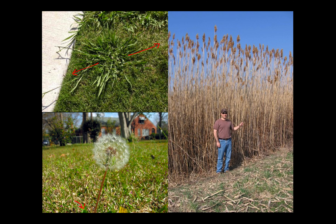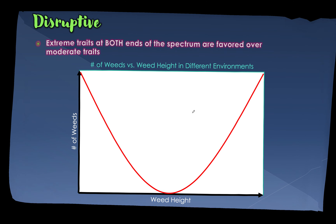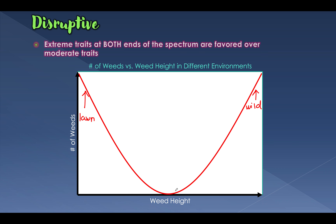On the tall end, this weed — Phragmites — has completely taken over cattails in most wetlands here in Wisconsin. It's actually an invasive species, and it's successful because of how tall it is. It outcompetes for sunlight versus shorter weeds; shorter weeds die out in a wild environment because they don't have enough sunlight to photosynthesize. So in disruptive selection, we have short on one end and tall on the other, and medium-height weeds in between are not very effective.